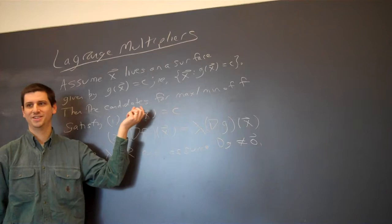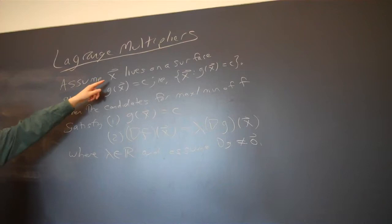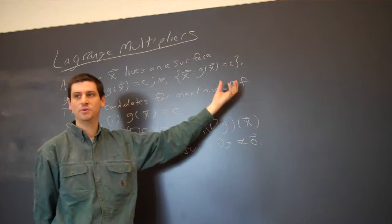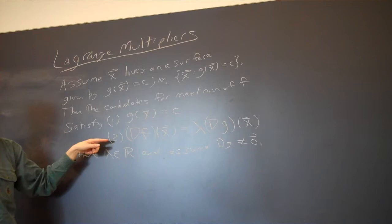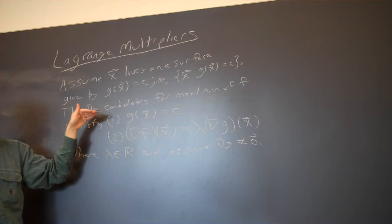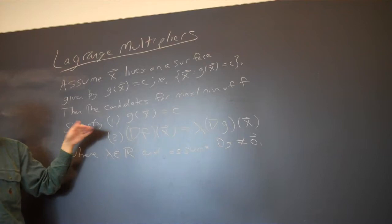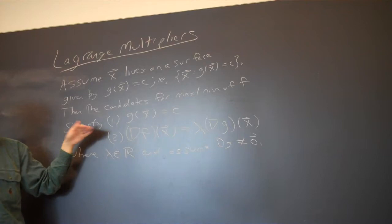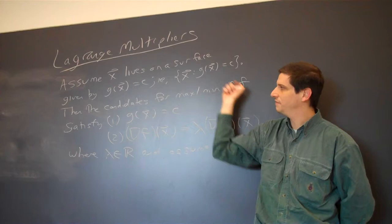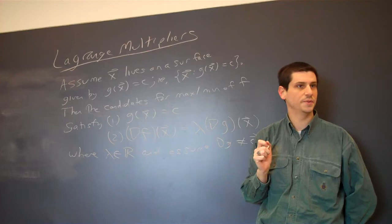Of these two conditions, one should be pretty obvious. The first one — g of x equals c — is obvious by definition, because we're telling you x lives on the surface. We want to find candidates for the maximum or minimum of f among all the x that live on the surface, so we have to remember g of x equals c. When people do Lagrange multipliers, this is one of the most forgotten points.